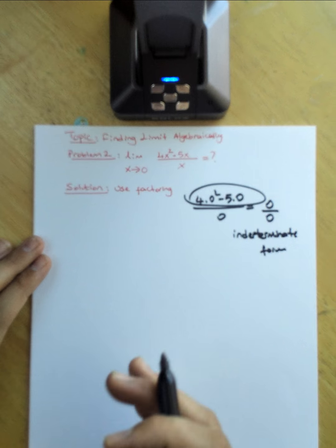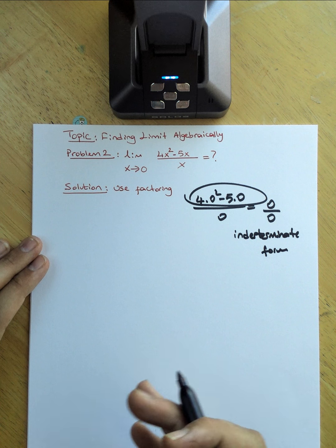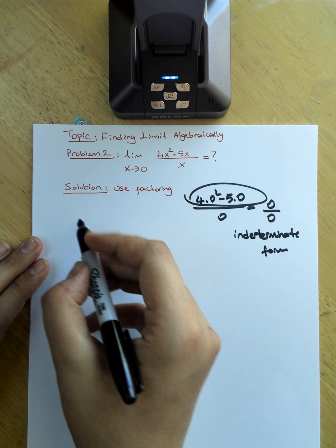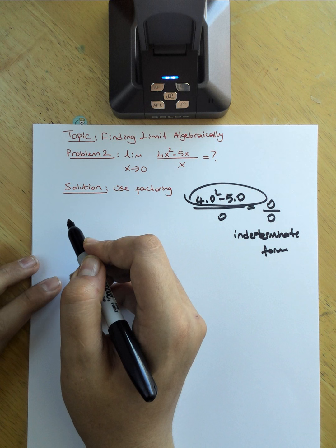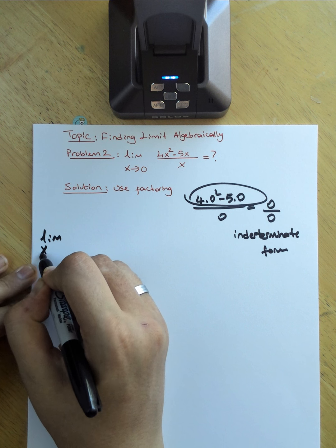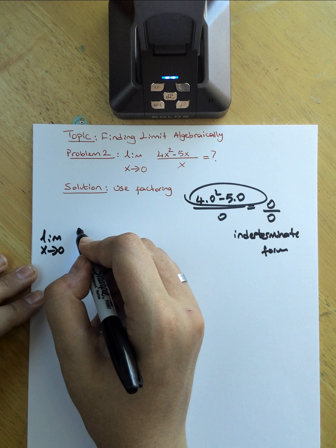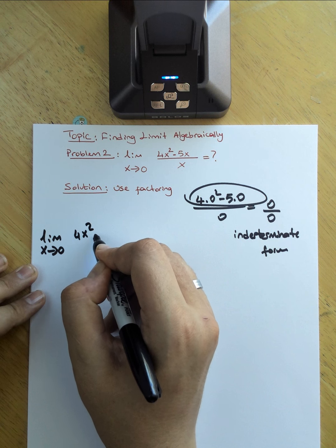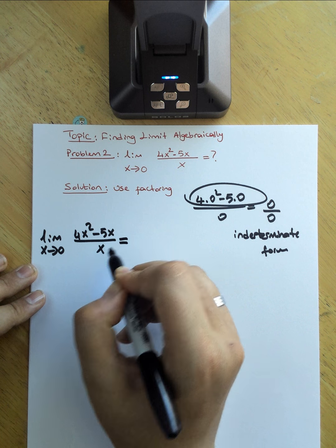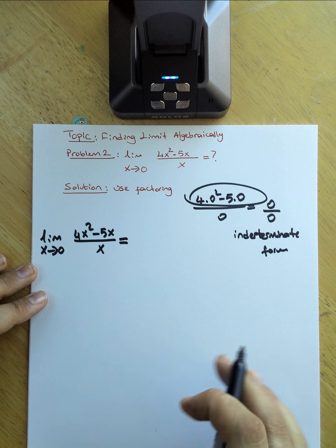To avoid getting an indeterminate form, I'm going to use factoring to calculate the limit. So my limit becomes limit x approaches 0 of 4x squared minus 5x over x. I'll be using the greatest common factor method. If I factor out x from the top expression, I get limit x approaches 0 of x times (4x minus 5) over x.